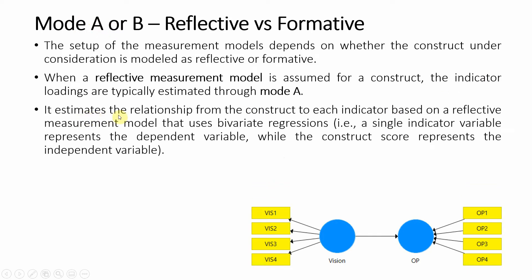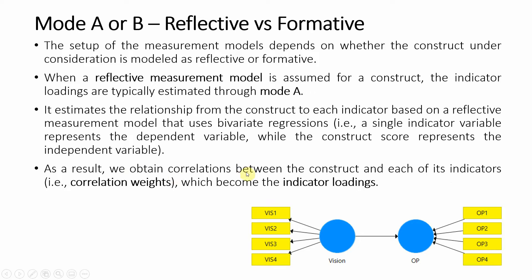It estimates the relationship from the construct to each indicator based on a reflective measurement model that uses bivariate regression. The indicator here is your dependent variable, and the construct score represents your independent variable, because the arrow is flowing from the construct to the indicators. As a result, we obtain the correlation between the construct and its indicator — these are correlation weights which become the loadings, showing how well these items are representing the underlying construct.